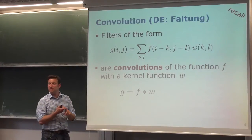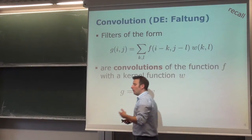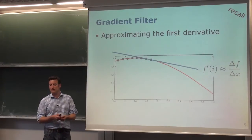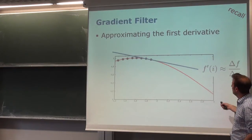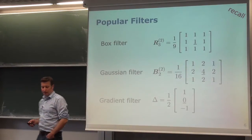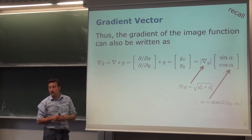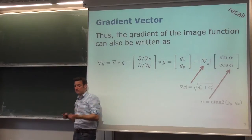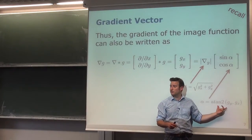Depending on how the kernel is defined, we get different properties. We saw kernels used for smoothing — averaging over a local neighborhood — and gradient operators for computing the first derivative of the image function. The first derivative is approximated by looking at the change in intensity f over the change in x. For a 2D image, we compute the gradient in the x direction and the partial derivative in the y direction.